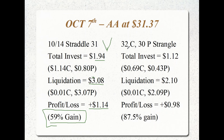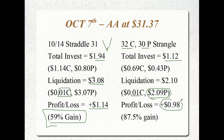For the Alcoa strangle, with stock at $31.37, we might use a $32 call and $30 put. Total investment was $1.12 — $0.69 for the out-of-the-money call and $0.43 for the put. After the stock dropped about 3 points, our $30 put went up to $2.09. The call went essentially to zero on the shorter expiration. This gave us a gain of $0.98, or 87.5%. With a 10% movement, the strangle outperforms percentage-wise, while the straddle has higher absolute dollar profit.